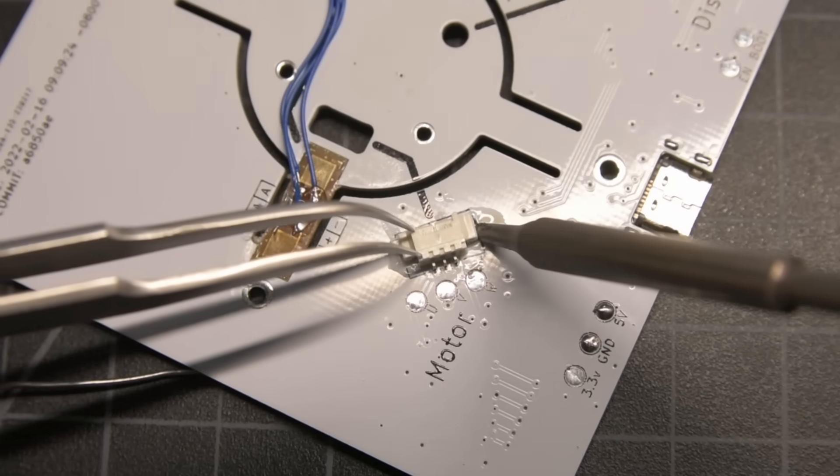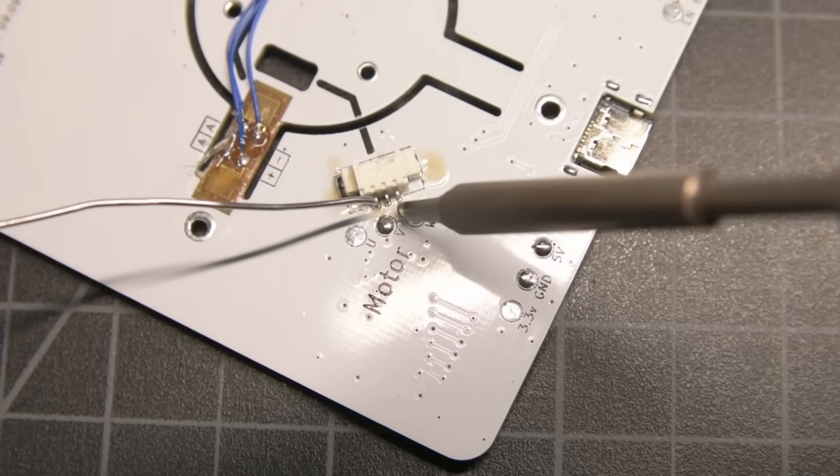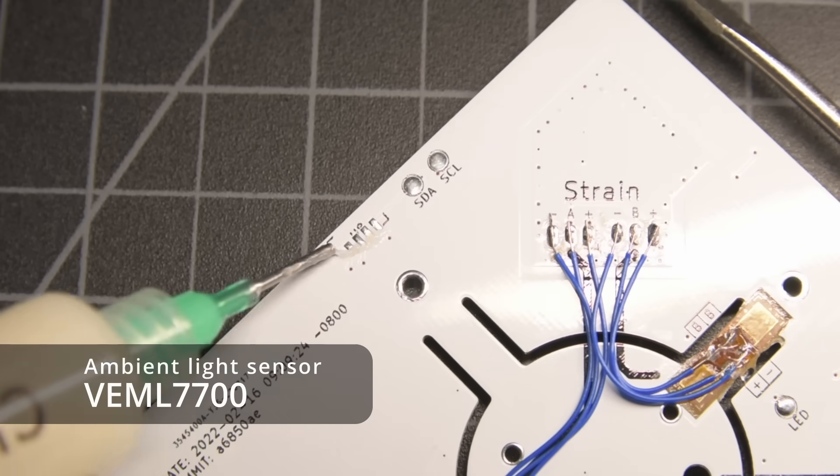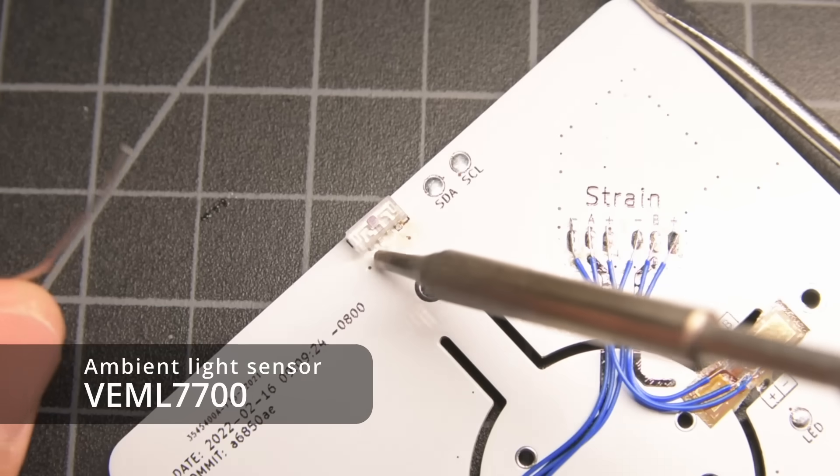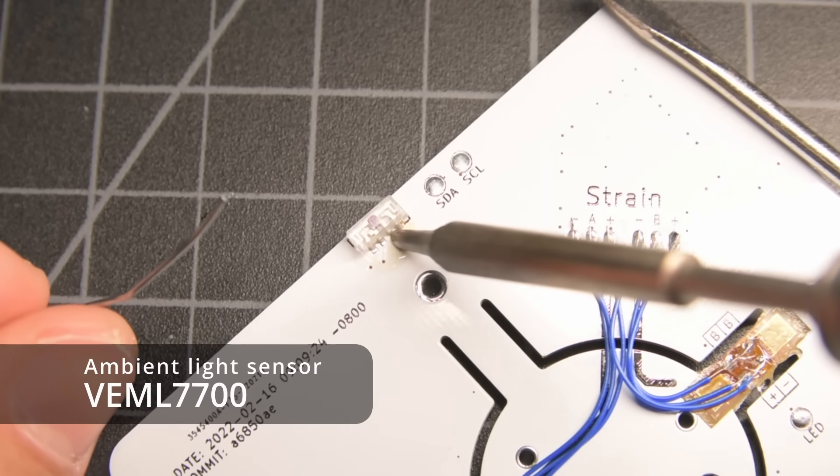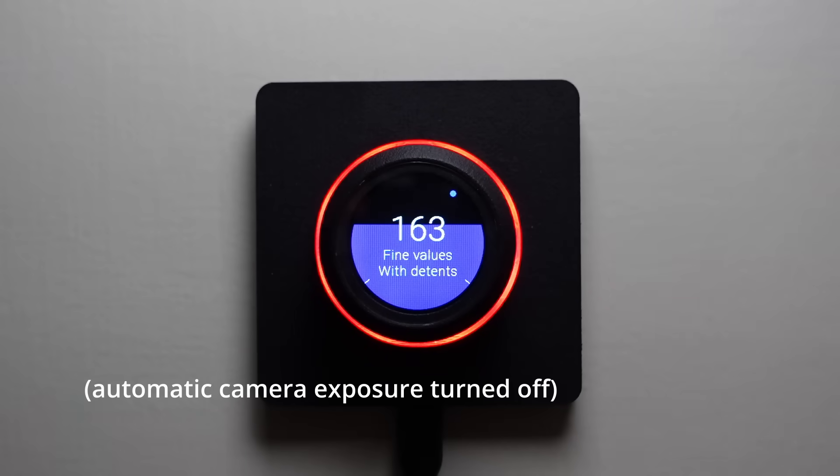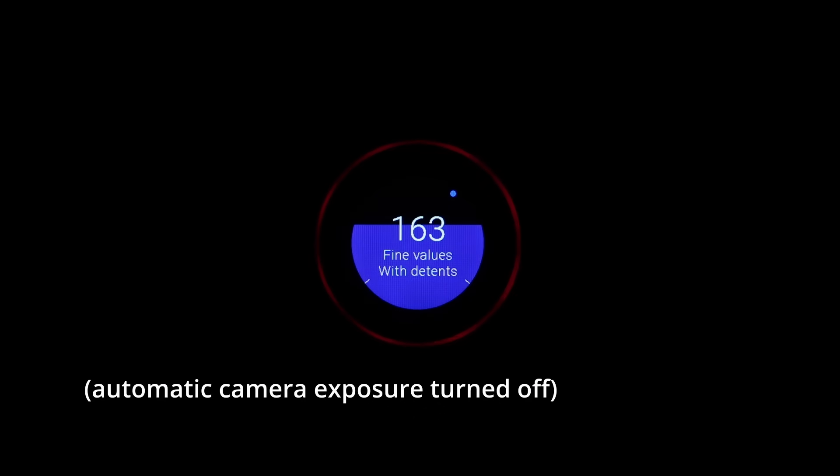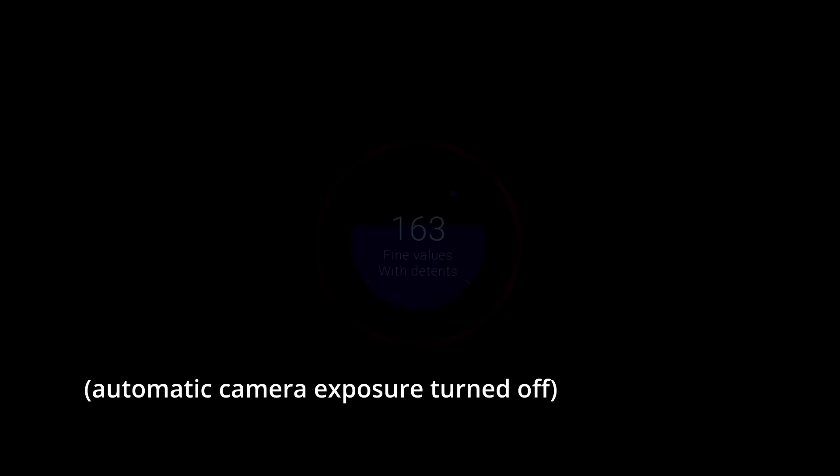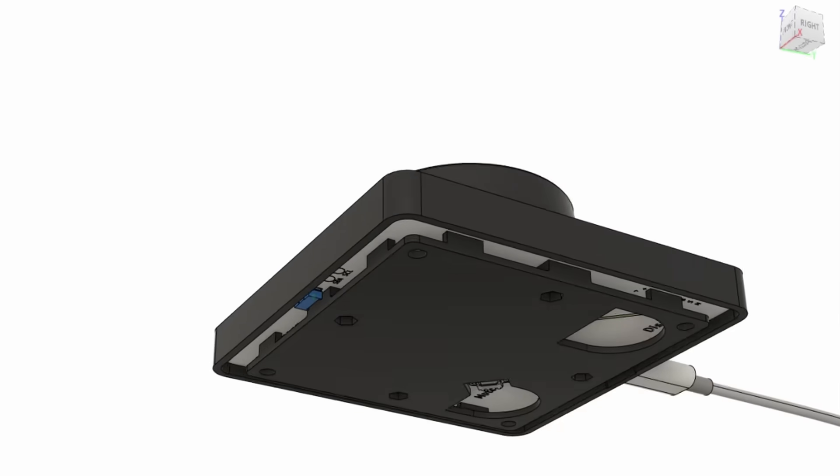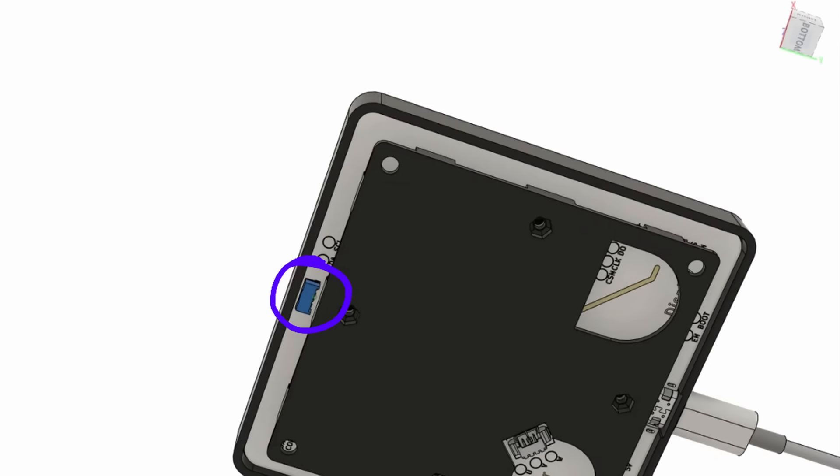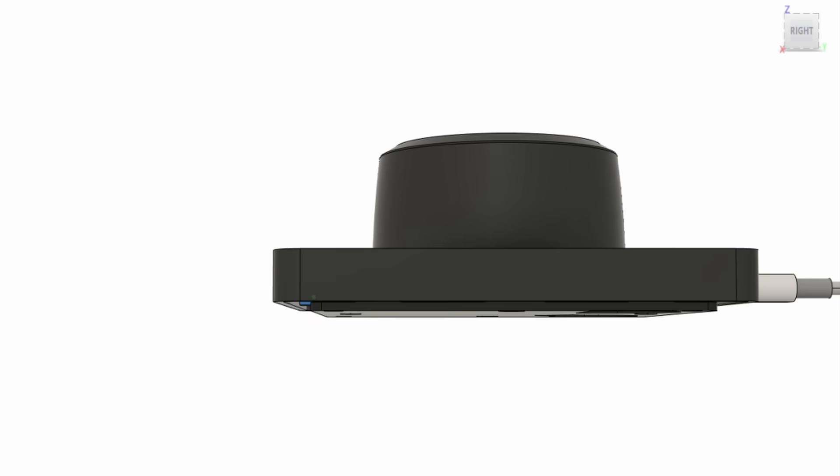The last two pieces that need to be hand-soldered to the back of the PCB are the motor connector and this VEML7700 ambient light sensor. The ambient light sensor allows the LCD and RGB LED ring to automatically adjust to different lighting conditions and avoid becoming a blinding light in a dark room. Normally you'd find an ambient light sensor like this on the front or top surface, like on your phone, but I wanted to keep the front surface free of unnecessary holes. So on the smart knob, I pointed the light sensor out of the back, where it sits just barely above the surface that it's mounted to.